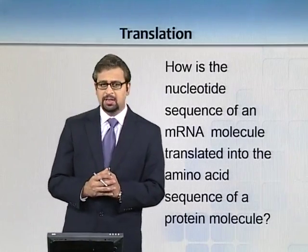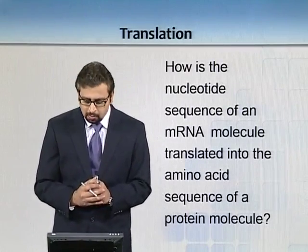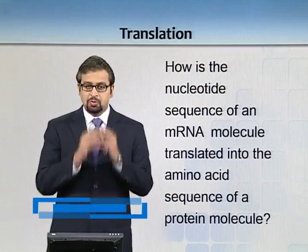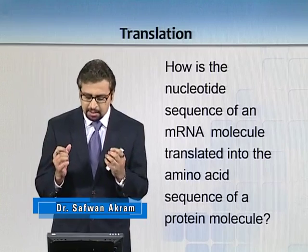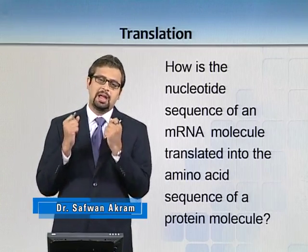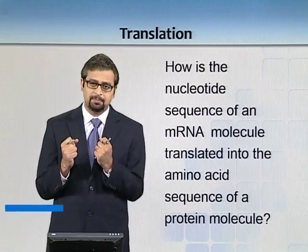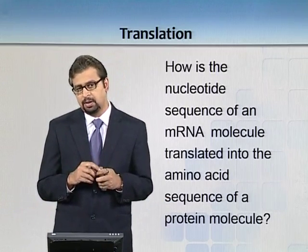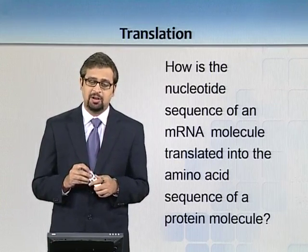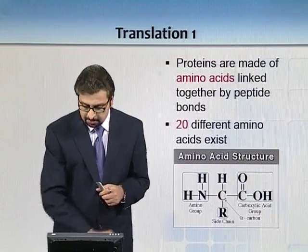We know what the genetic code is, but what is the exact mechanism by which codons on an mRNA molecule get translated into the amino acid sequence of a protein? How does it happen, and what is this process known as? This is known as translation.